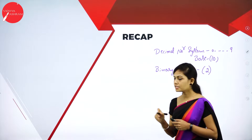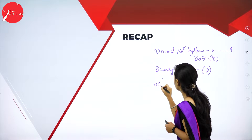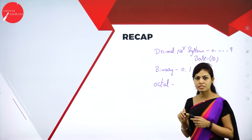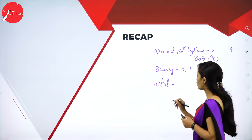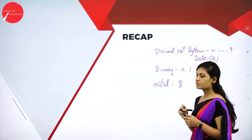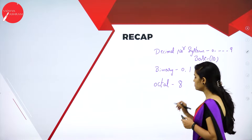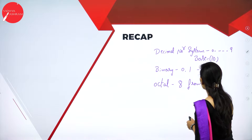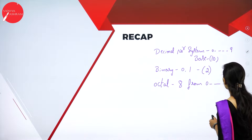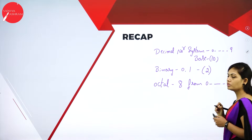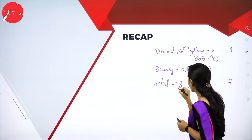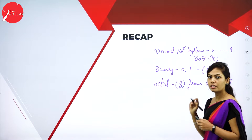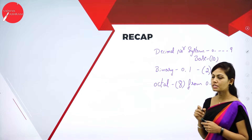Next is octal number system. Octal number system consists of 8 digits from 0 to 7. And the base value is 8. This is called octal number system.